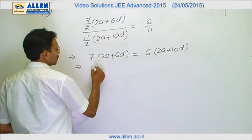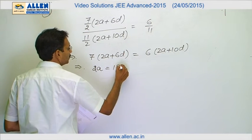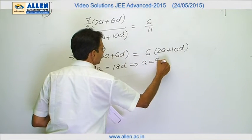This gives us 7 times 2a plus 6d equals 6 times 2a plus 10d. Now, 2a equals 18d or a is 9d.